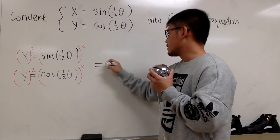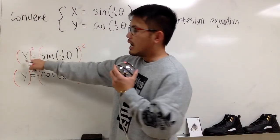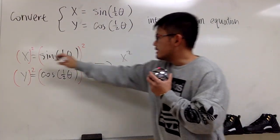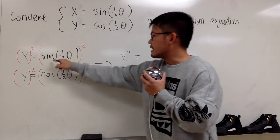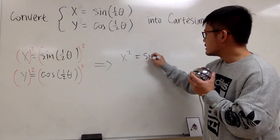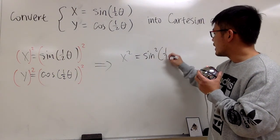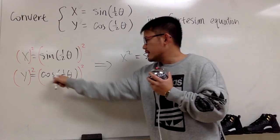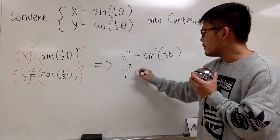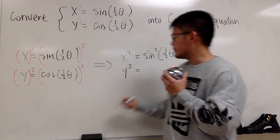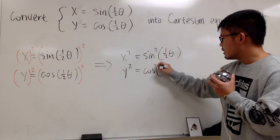And this is what we're going to get. On the first one, we have x squared. This is equal to—let's put a square right here—sine squared one-half theta. And then the second equation, we have y squared equals cosine squared one-half theta.